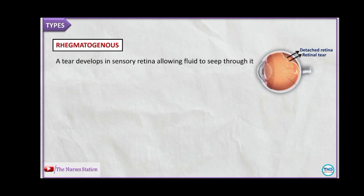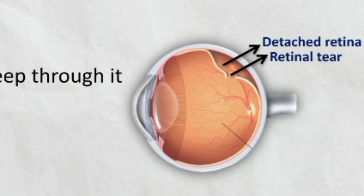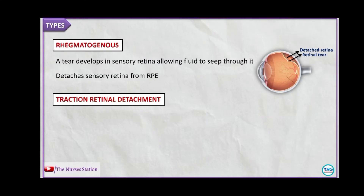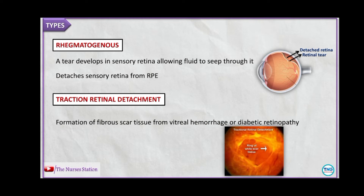The types of retinal detachment include rhegmatogenous retinal detachment. In this, a tear develops in the sensory retina which allows fluid to seep through it, detaching it from the underlying retinal pigment epithelium. The next is tractional retinal detachment. It results from fibrous scar tissue which forms in the eye due to vitreous hemorrhage or diabetic retinopathy. The scar tissue exerts a pulling force on the sensory retina, detaching it from the retinal pigment epithelium.